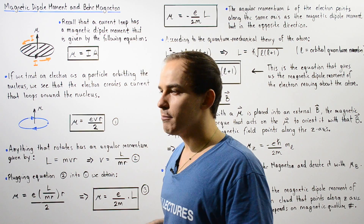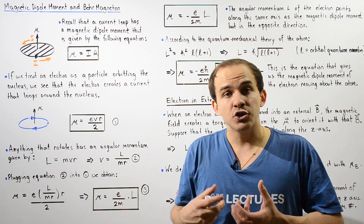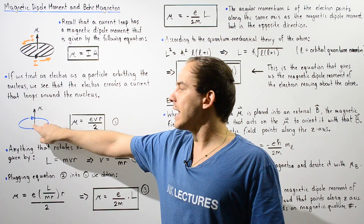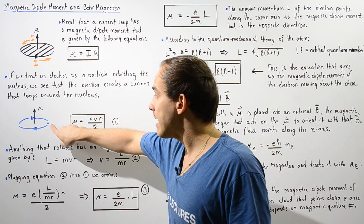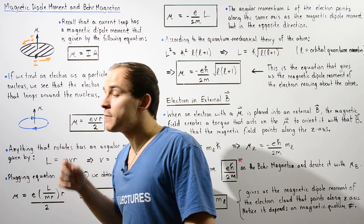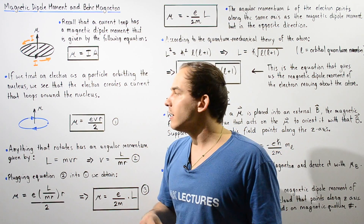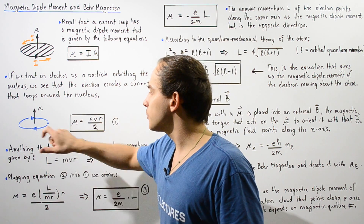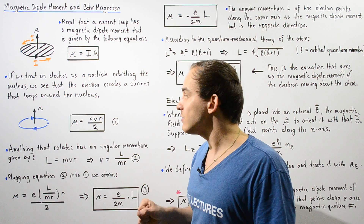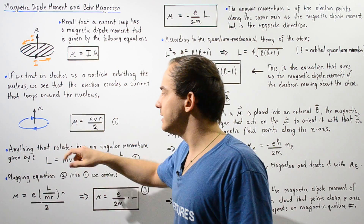What about the electron magnetic dipole moment? If we treat our electron as if it were a particle, we see that the electron actually creates its own electric current that loops or orbits the nucleus of the atom. The electron moves in the clockwise direction, and because it has a negative electric charge and moves with a very high velocity, it creates a continuous negative electric current. That's exactly why we have the reverse directions — this negative electric current creates a magnetic dipole moment that also points upward perpendicular with respect to the area.